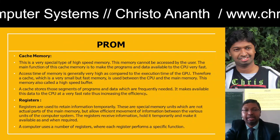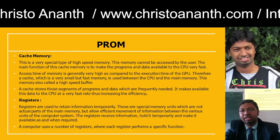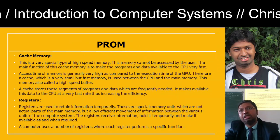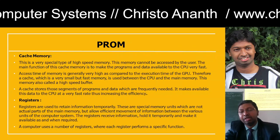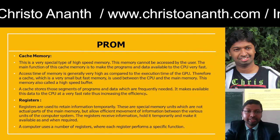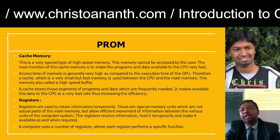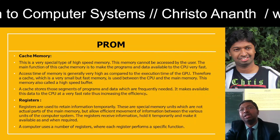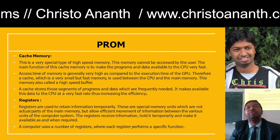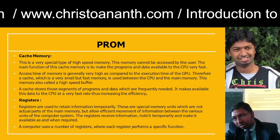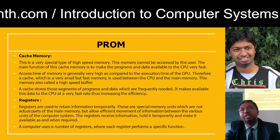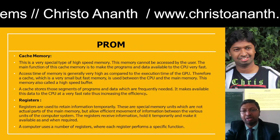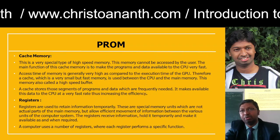Cache memory is a special type of high-speed memory that cannot be directly accessed by the user. Its main function is to make data, information, and instructions quickly available for the CPU. The access time of cache memory is very high compared to the execution time of the CPU. Cache is very small but very fast. It is used between the CPU and main memory and acts as a high-speed buffer, storing segments of programs and data to supply the CPU very quickly.